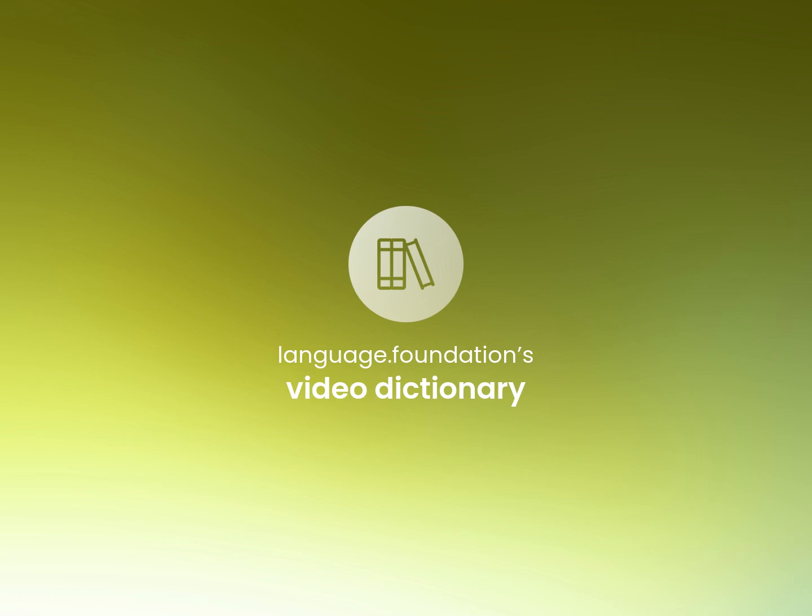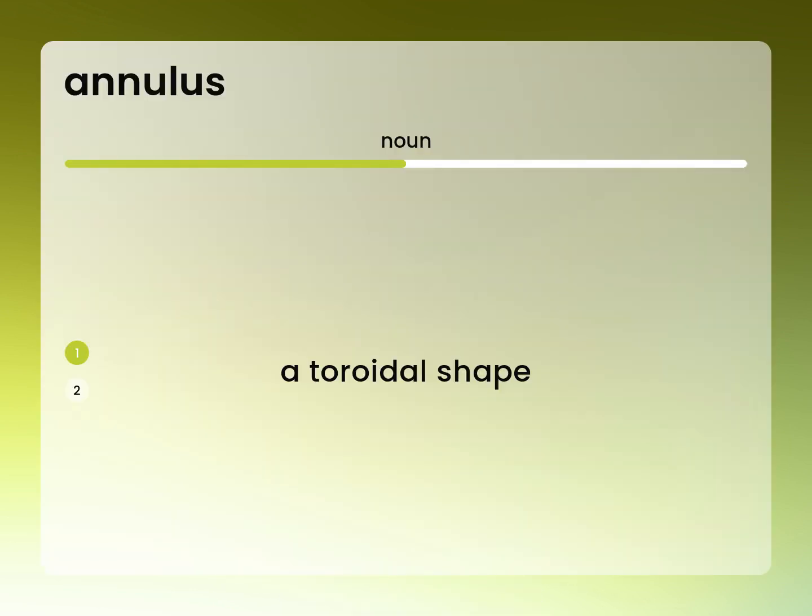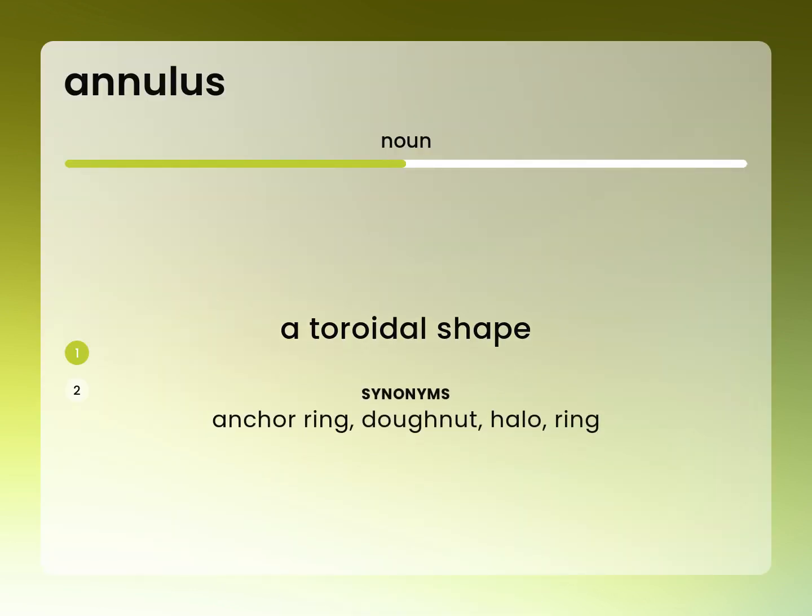Language.Foundation's Video Dictionary, helping you achieve understanding. A toroidal shape. Anchor ring, donut, halo, ring.